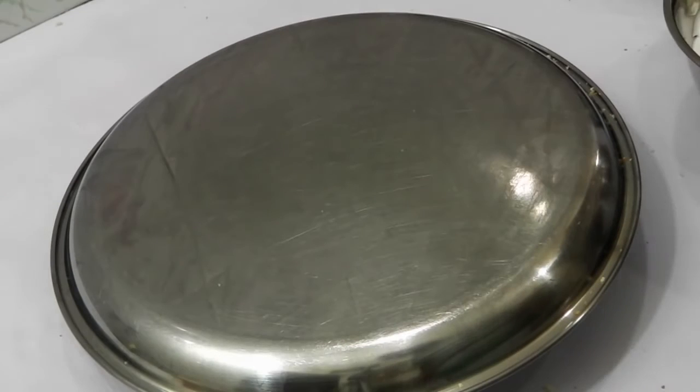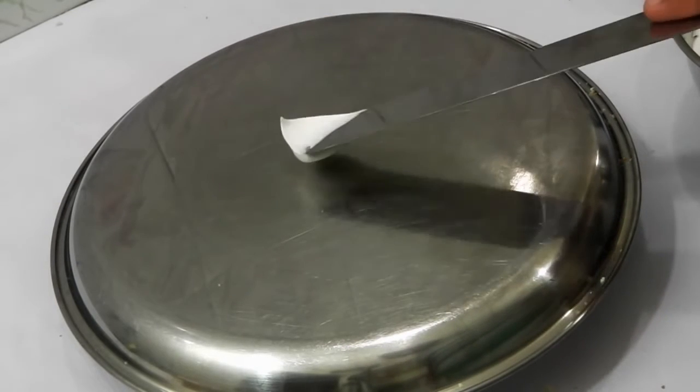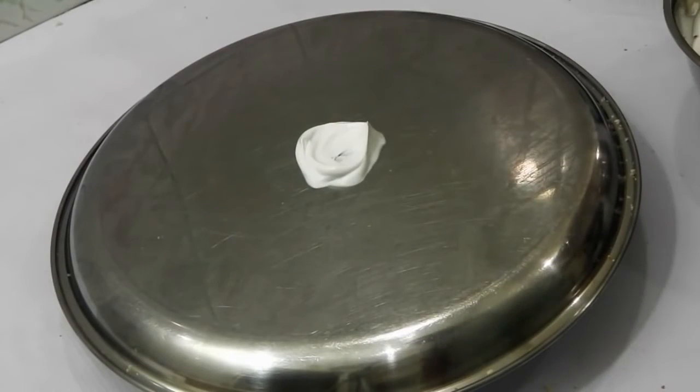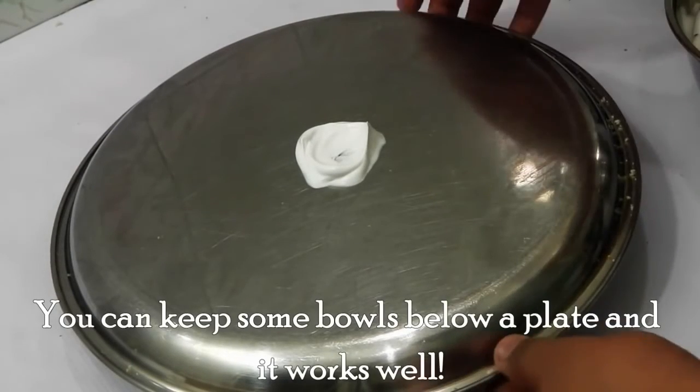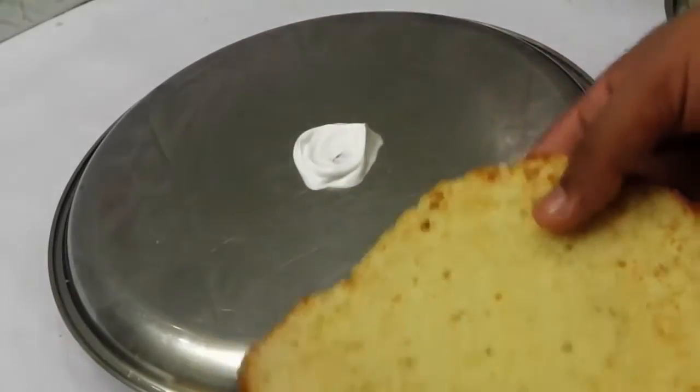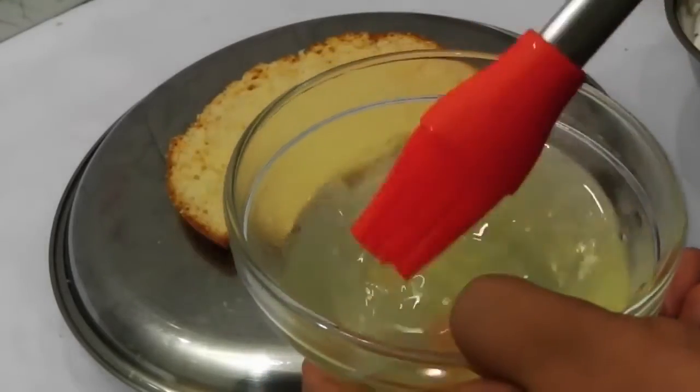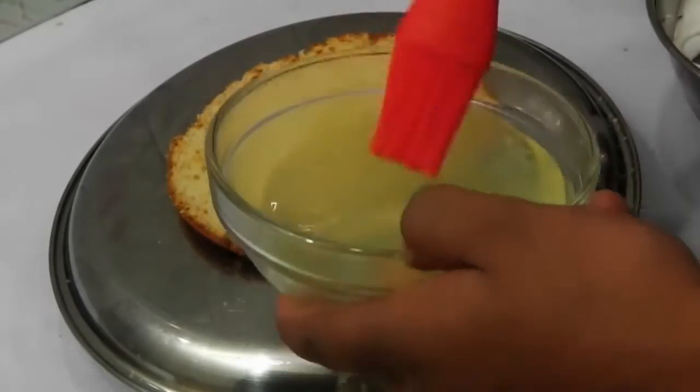Now let's start. First we'll have to take a small dollop of our whipped cream and spread it on our plate. I'm using a turntable, and above that I have a plate. Now we're going to take the bottom most layer and keep it in the center. We have the sugar syrup from the tin pineapples; we're going to spread it around the sponge.